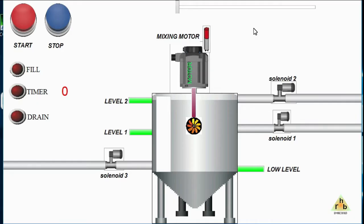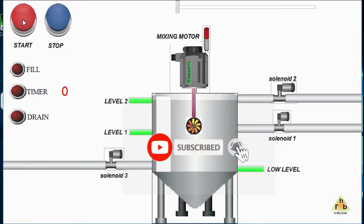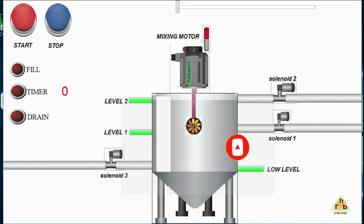We created one HMI animation screen which includes two push buttons used to start the process and to stop the process at any time, along with some indicators, fill timer, and drain process. There are two solenoid valves to fill the tank and one solenoid valve used to drain the tank after the process is completed.